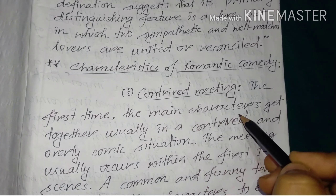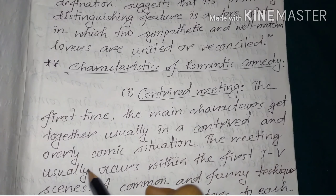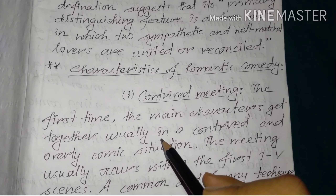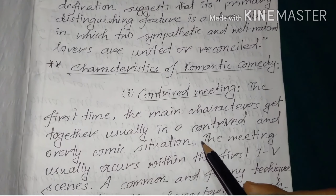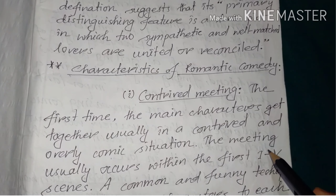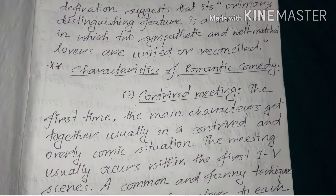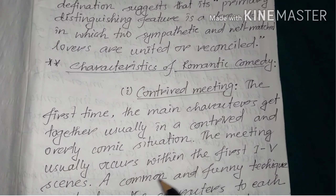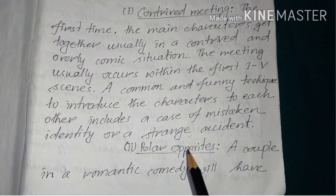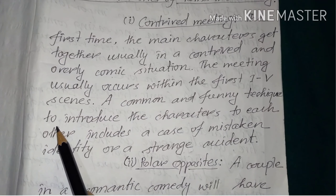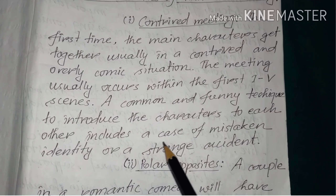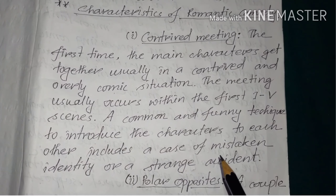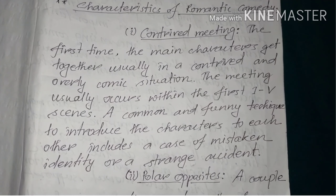The first time the main characters get together is usually in a contrived and overly comic situation. The meeting usually occurs within the first one to five scenes. A common and funny technique to introduce the characters to each other includes a case of mistaken identity or a strange accident.